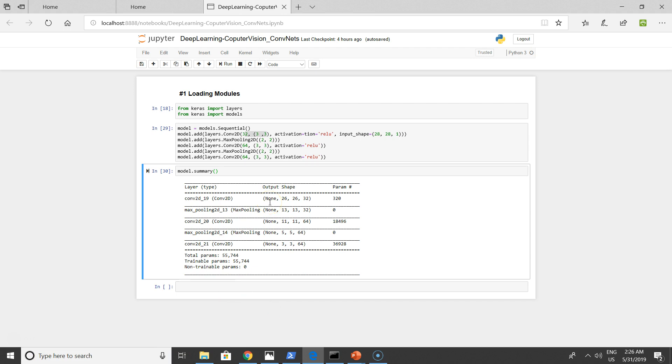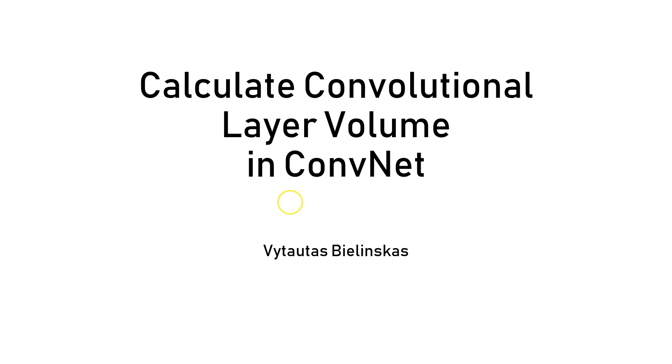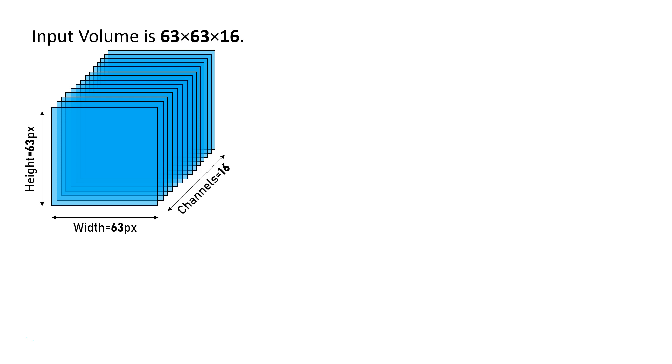For example, if you have an input shape of 28 by 28 and one channel, and in a convolutional filter you have 32 filters which is 2 by 3, how is 26 by 26 by 32 calculated? How to calculate the output shape of your convolutional layers? For this, I will use a very simple example.